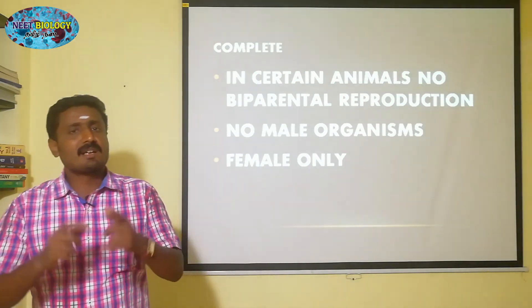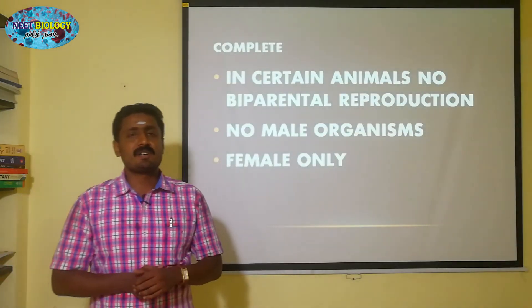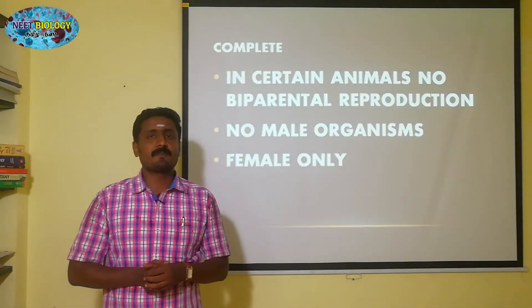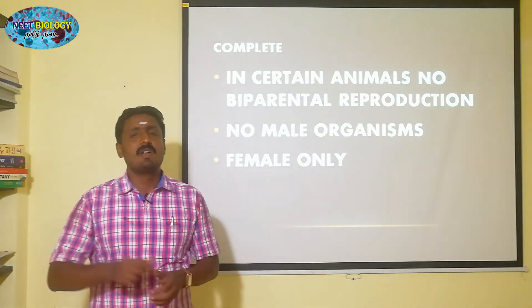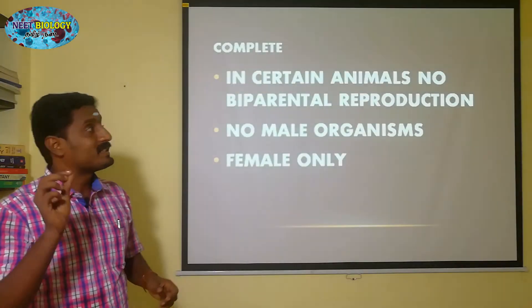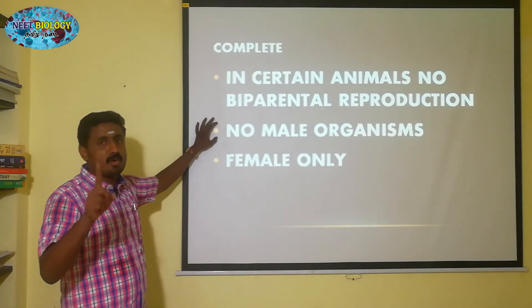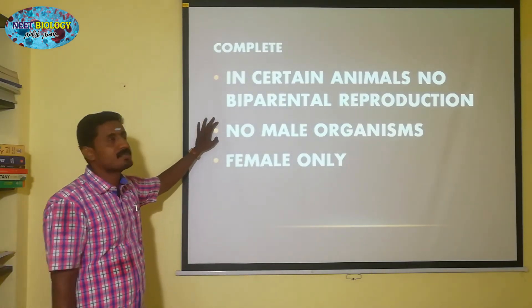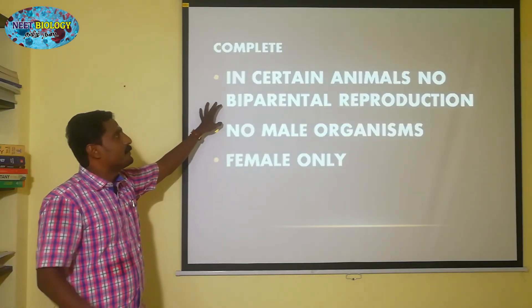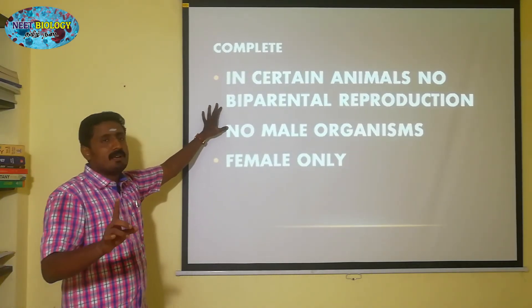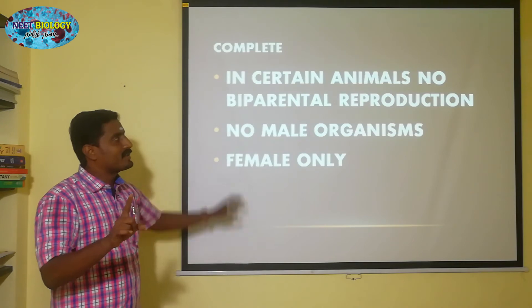If there is a male, there is sexual reproduction. In complete parthenogenesis, only females are formed — no male organisms. As you can see, there is a uniparental condition rather than a bi-parental condition.